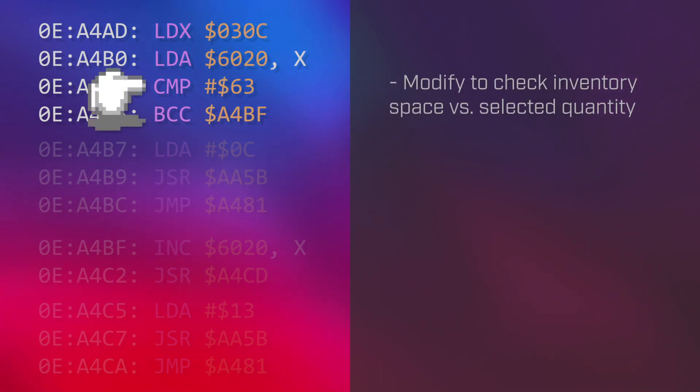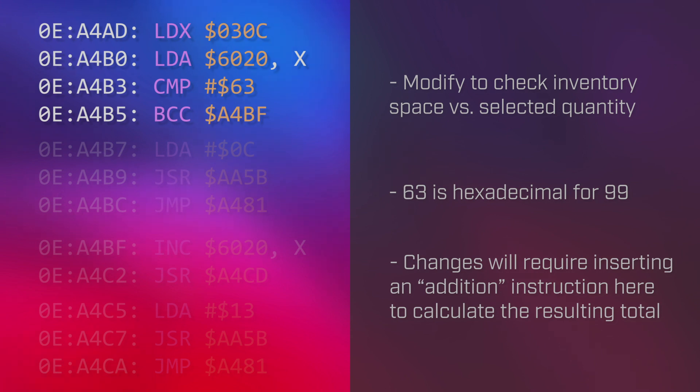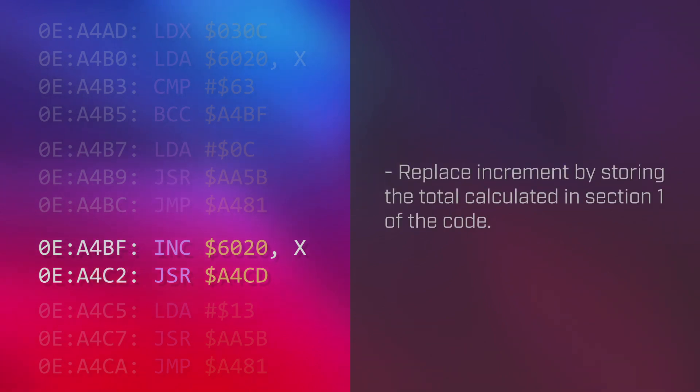The first section would need to be modified to take the quantity into account. The original code only checked if the player already had 99 of the chosen item in their inventory. My change would need to add the current inventory count to the selected quantity and then ensure that total didn't exceed 99. In section 3, the original code uses a single increment instruction to add 1 to the count in the player's inventory — I'd need to replace this with a different instruction that instead stored the total we had already calculated to that memory location.